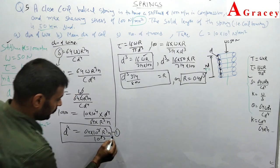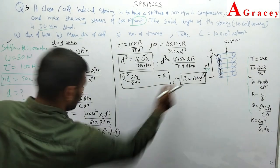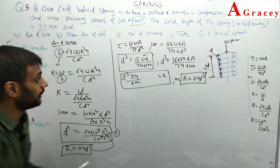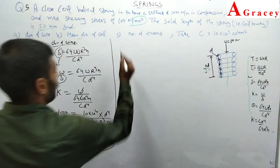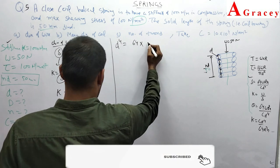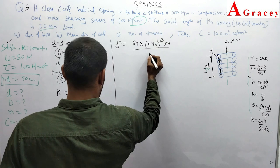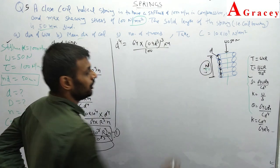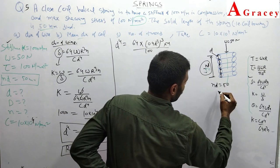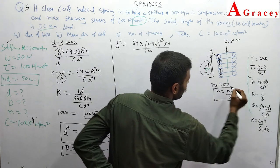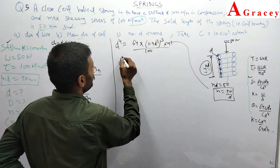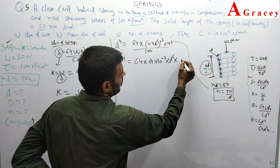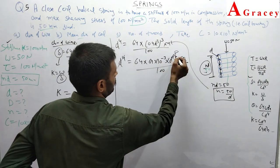After substituting all terms including n = 50/d and r = 0.4d³ into equation 1 and solving, we obtain d = 4.7 mm as the wire diameter. Then the mean radius r = 0.4 × (4.7)³ = 0.4 × 103.8 ≈ 41 mm. So the mean coil radius is 41 mm and wire diameter is approximately 4.7 mm.